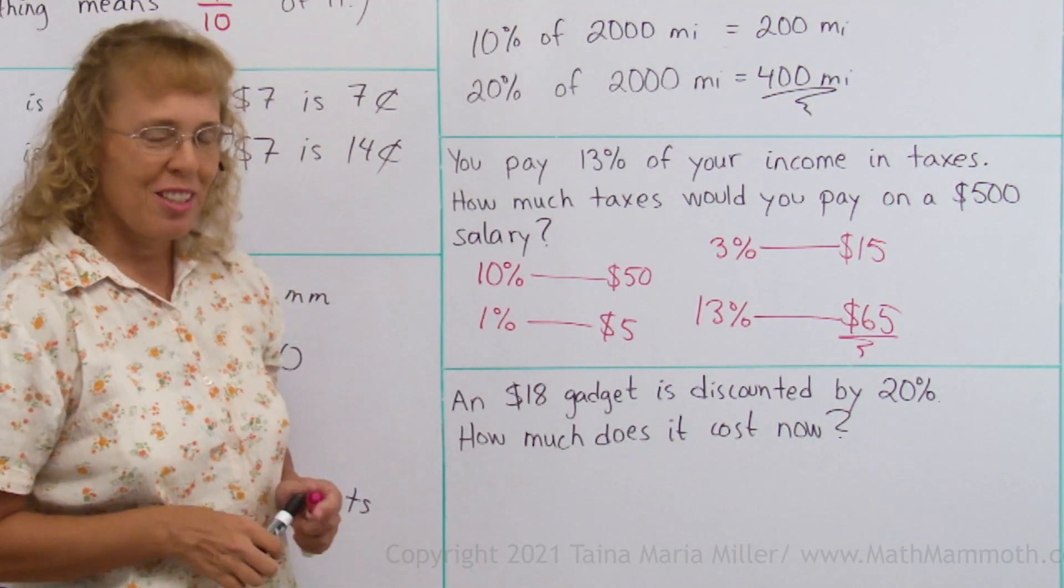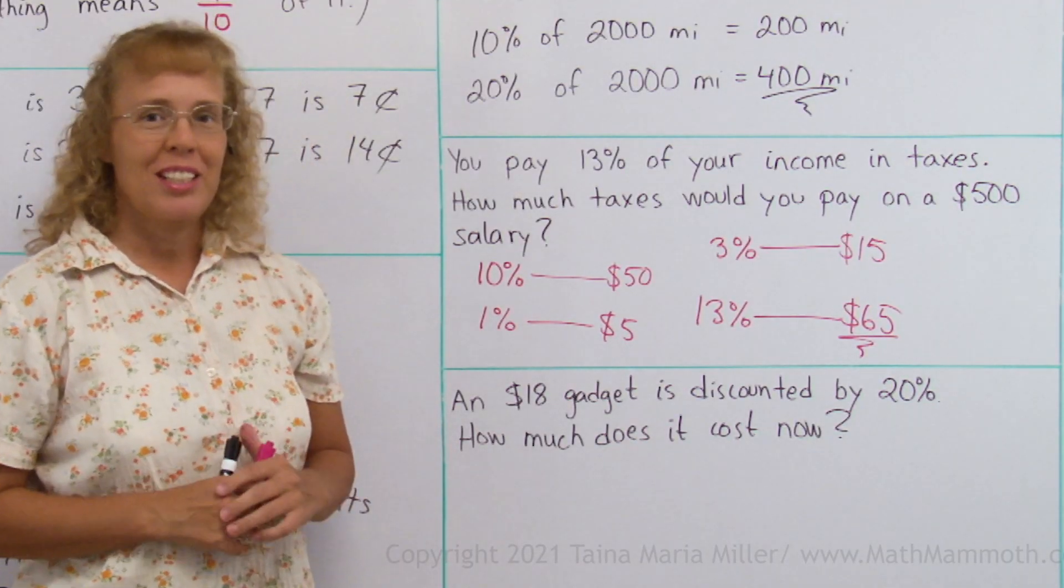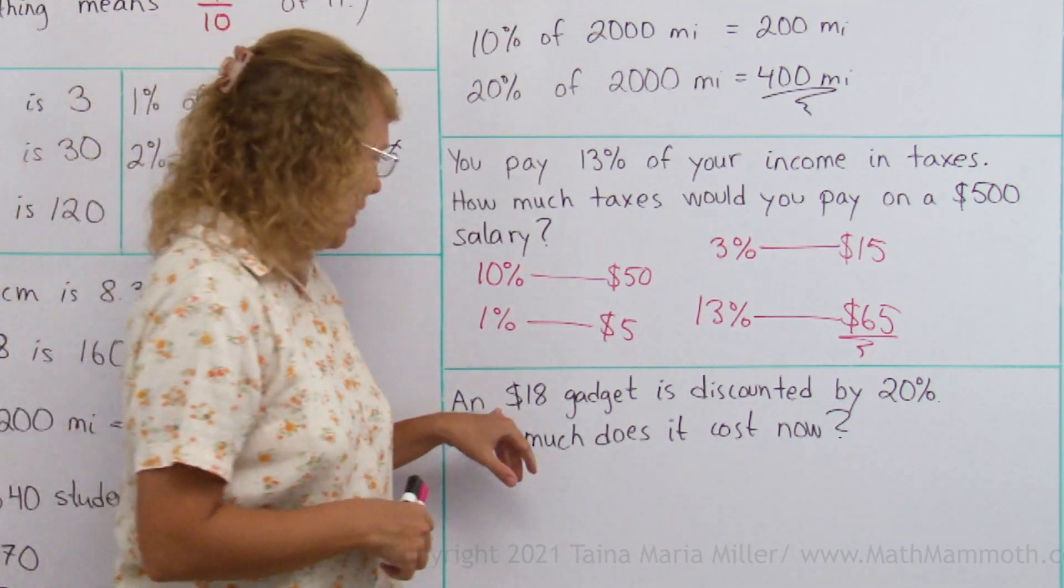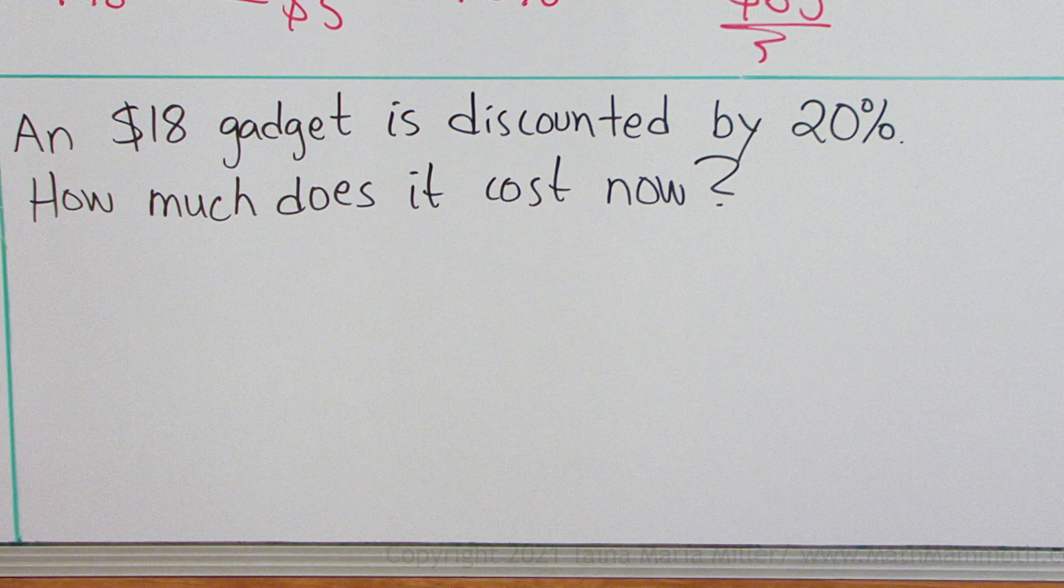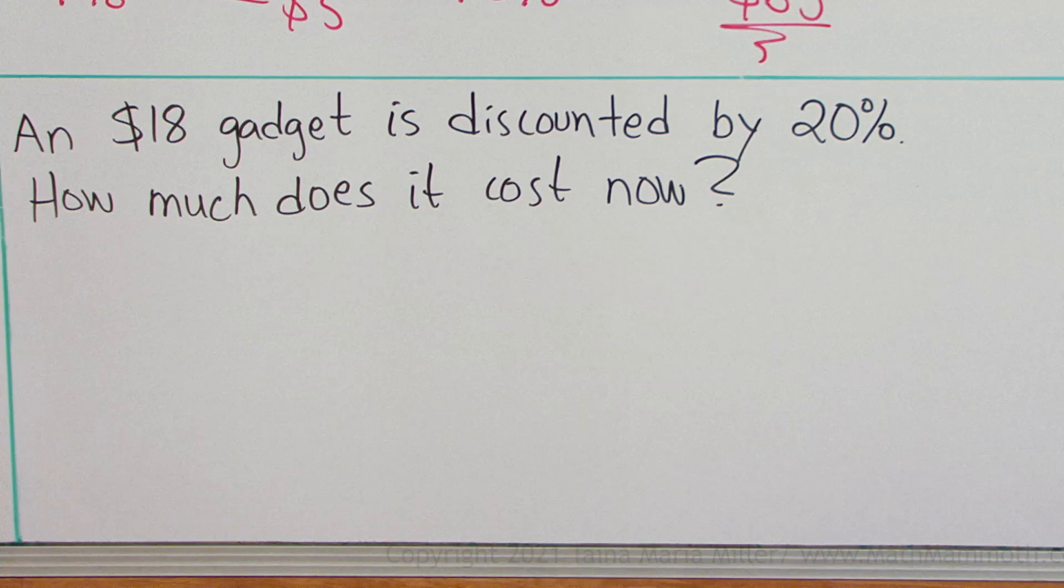Lastly, we get into discounts, and those are of course very important to know how to calculate. An $18 gadget is discounted by 20%. How much does it cost now?